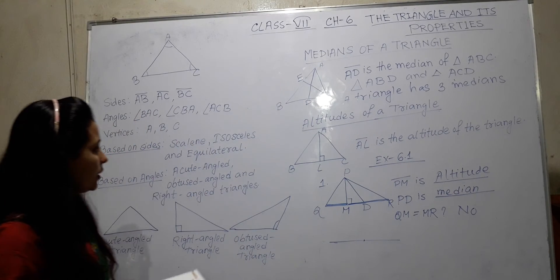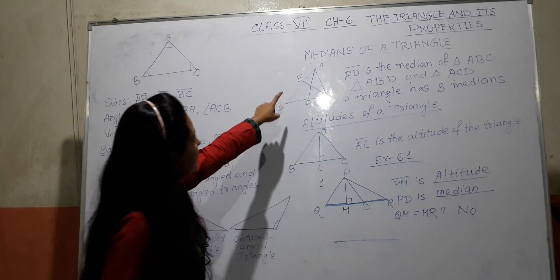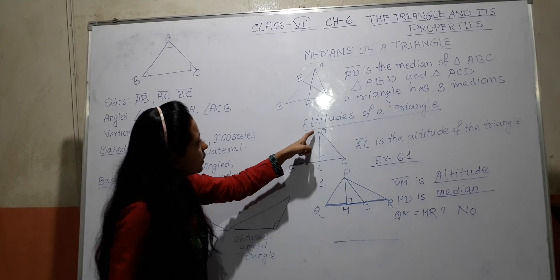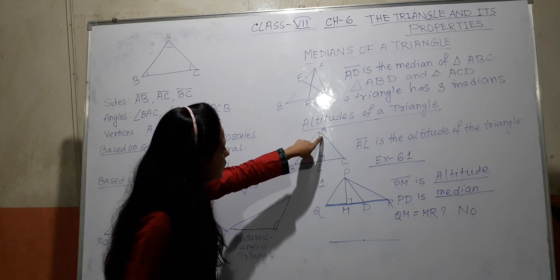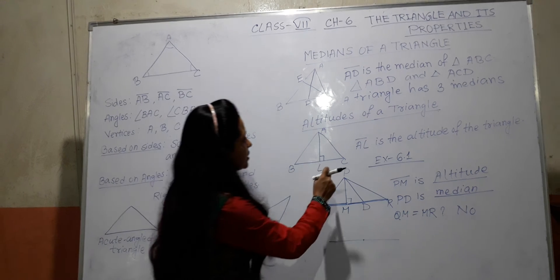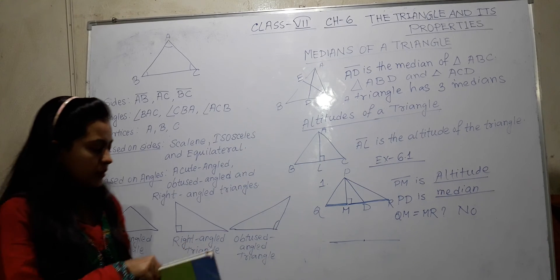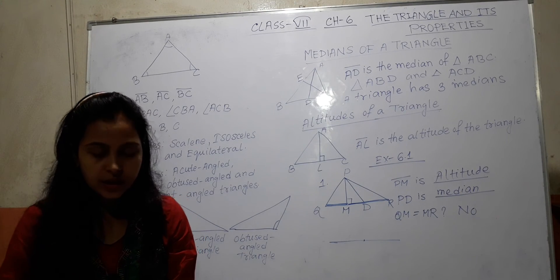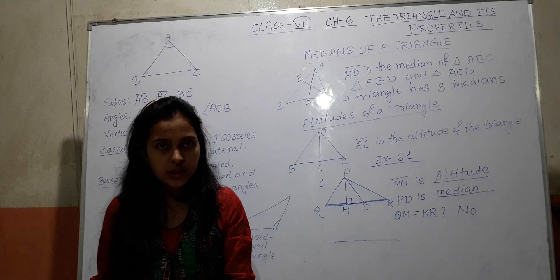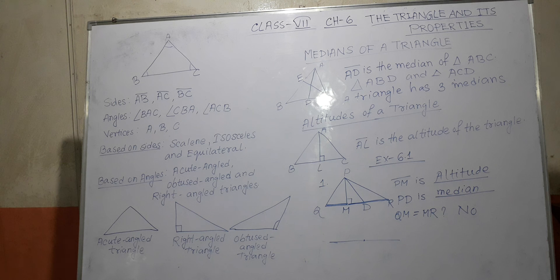So for exercise 6.1, you need to know what is median, what is altitude. Median means which divides triangle in equal parts. Altitude means which comes line straightly down on the opposite side perpendicularly. Means which makes 90 degree angle on the opposite sides. This is called altitude. Try to do your homework. Only one question is there. I think this will be easier to solve. If question number 2 there is any problem I will send you answer. That's all for this class. Thank you.